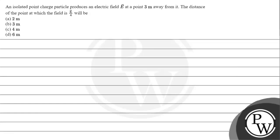Hello, let's take a given question. The question says an isolated point charge particle produces an electric field E bar at a point 3 meters away from it. The distance of the point at which electric field is E bar by 4 will be: option a) 2 meter, option b) 3 meter, option c) 4 meter, option d) 6 meter.